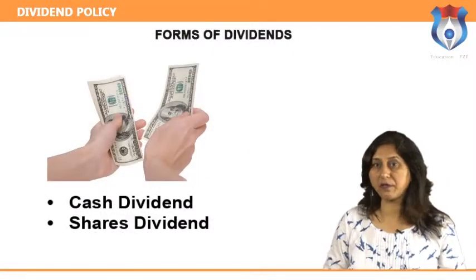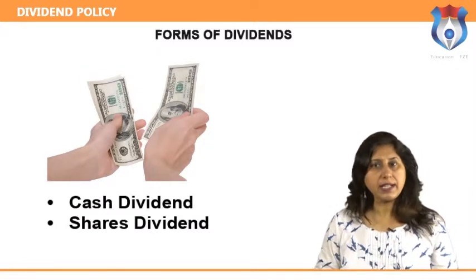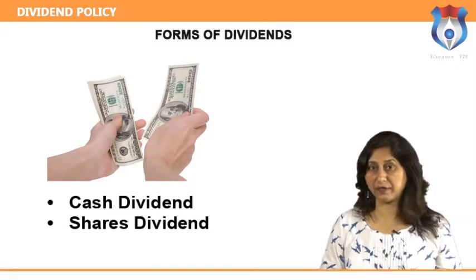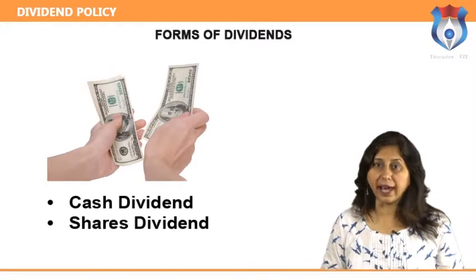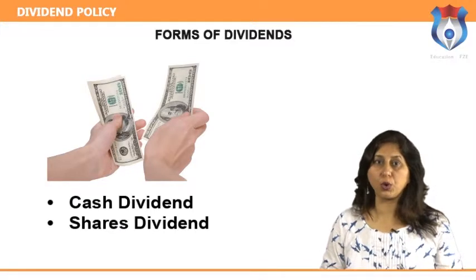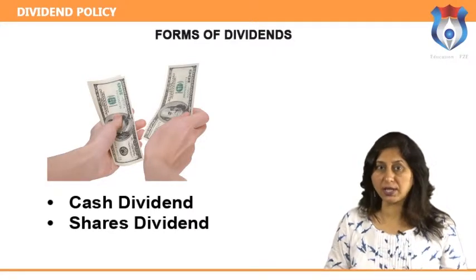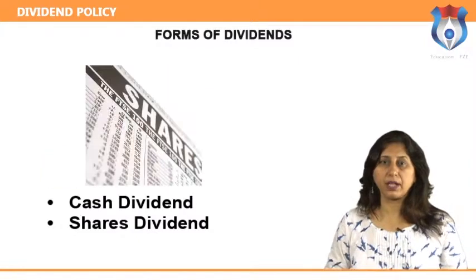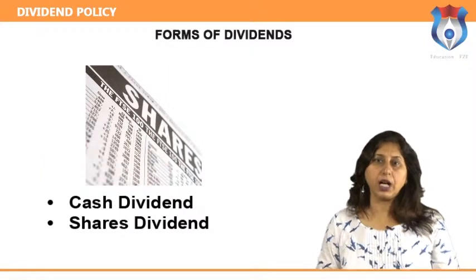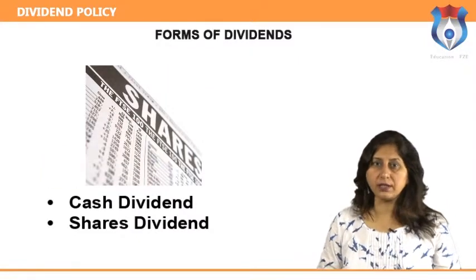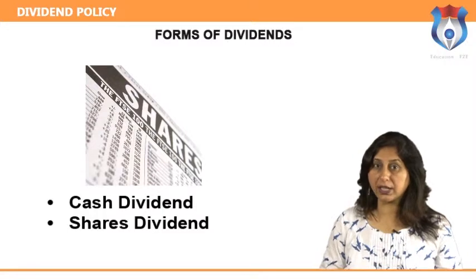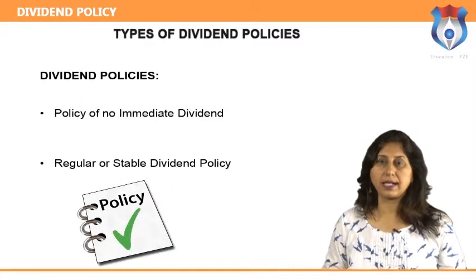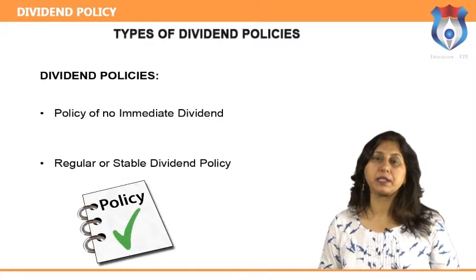Forms of dividends. Dividends are available in various forms. Cash dividend: the payment of cash dividends to holders of shares is decided by the board. Stock dividend: a stock dividend is the payment of dividends in shares to existing owners.